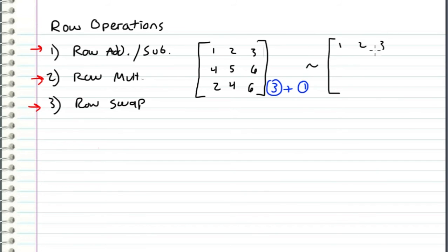where the first two rows are the same, because they are not affected by this operation. And the third row is row three plus row one, which in this case is two plus one, which is three, four plus two, which is six, and six plus three, which is nine.